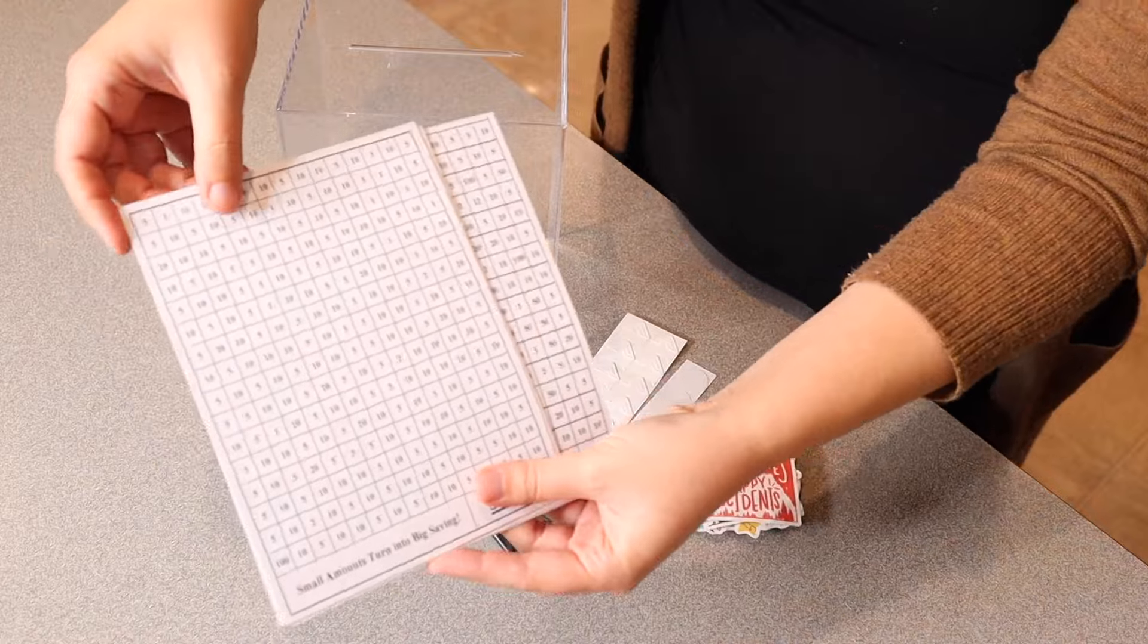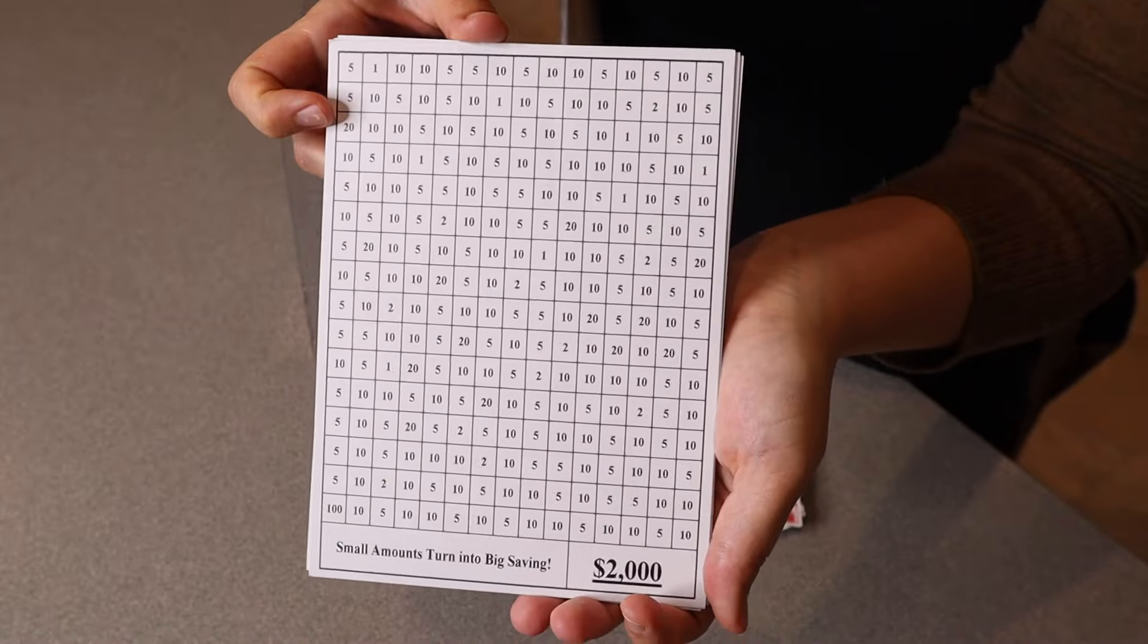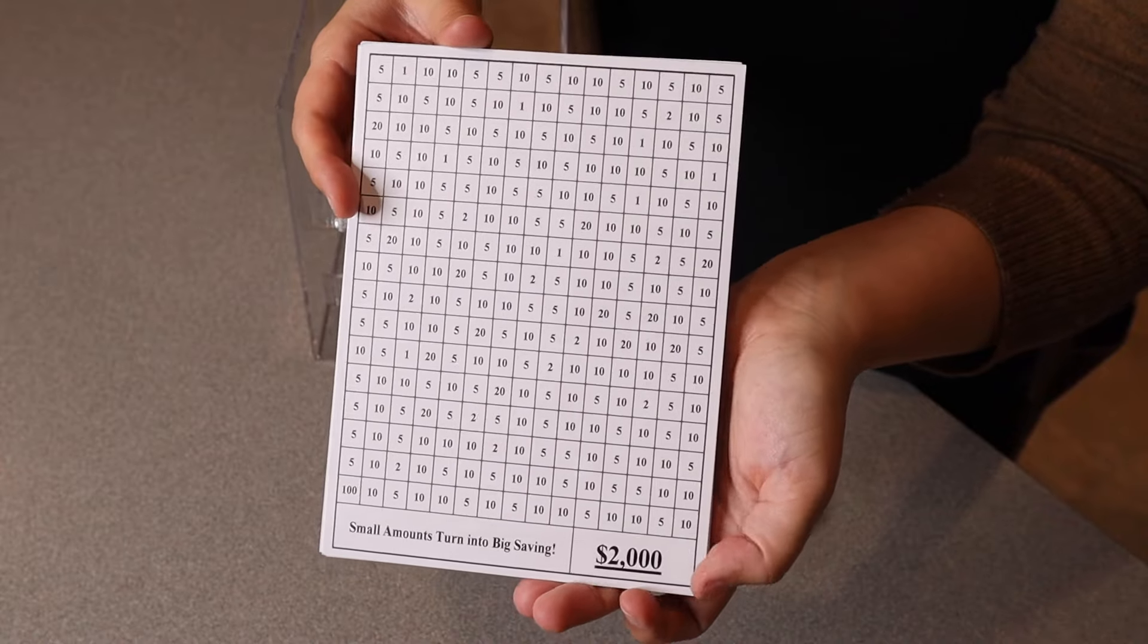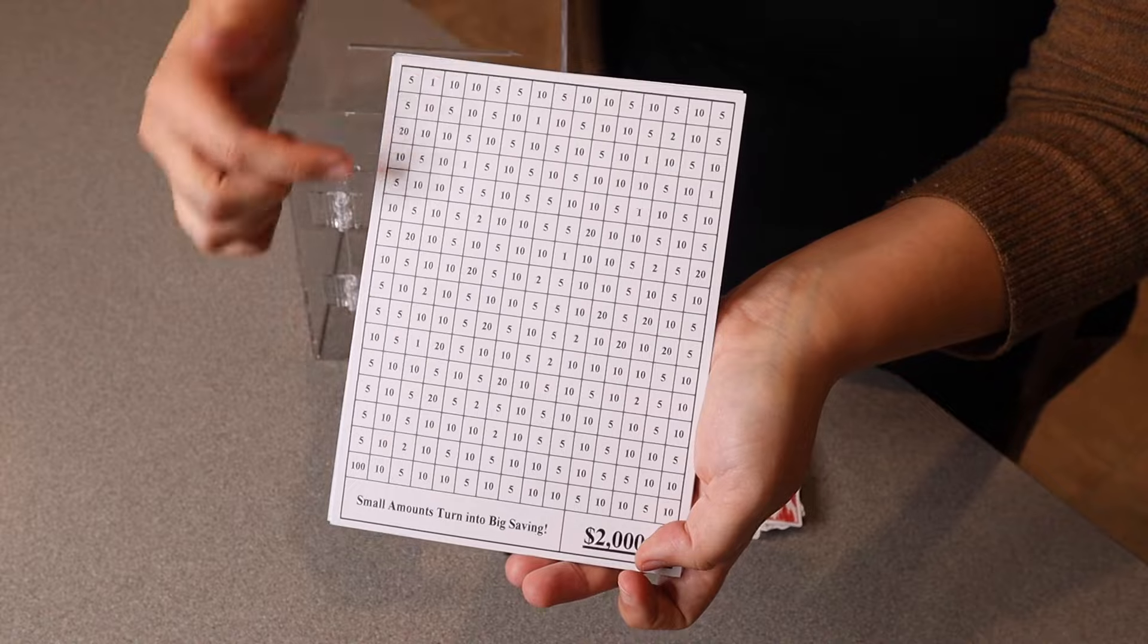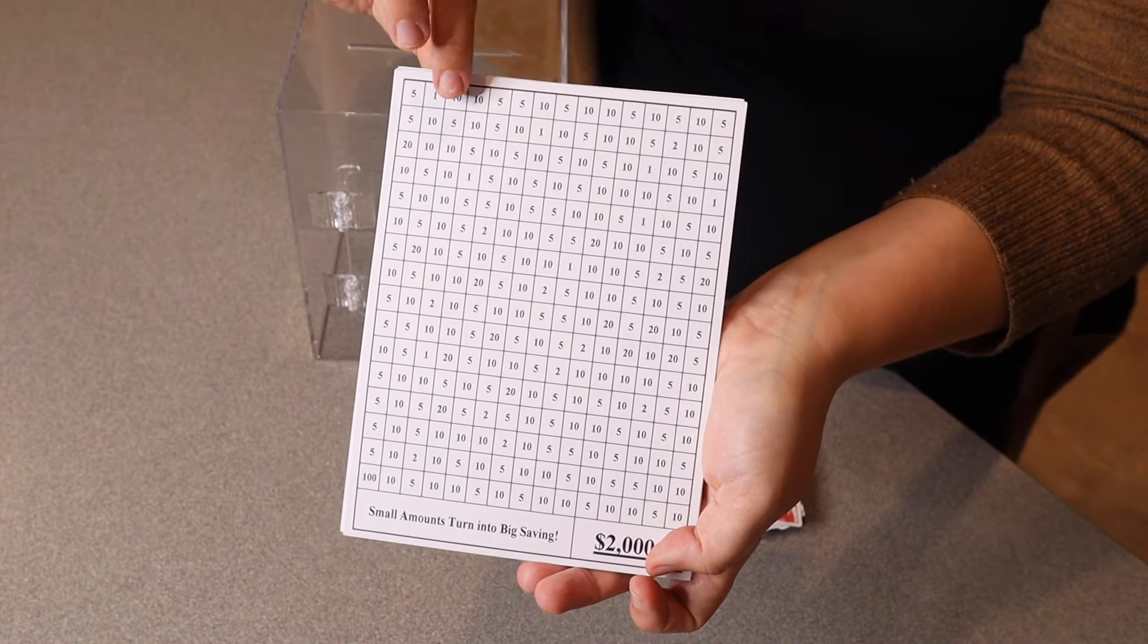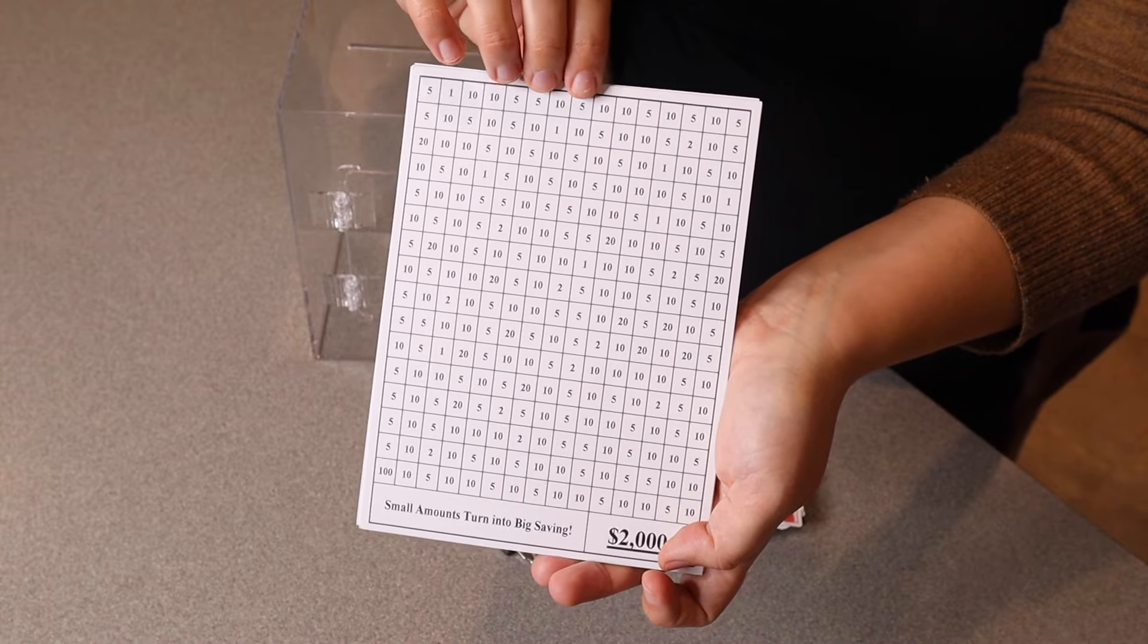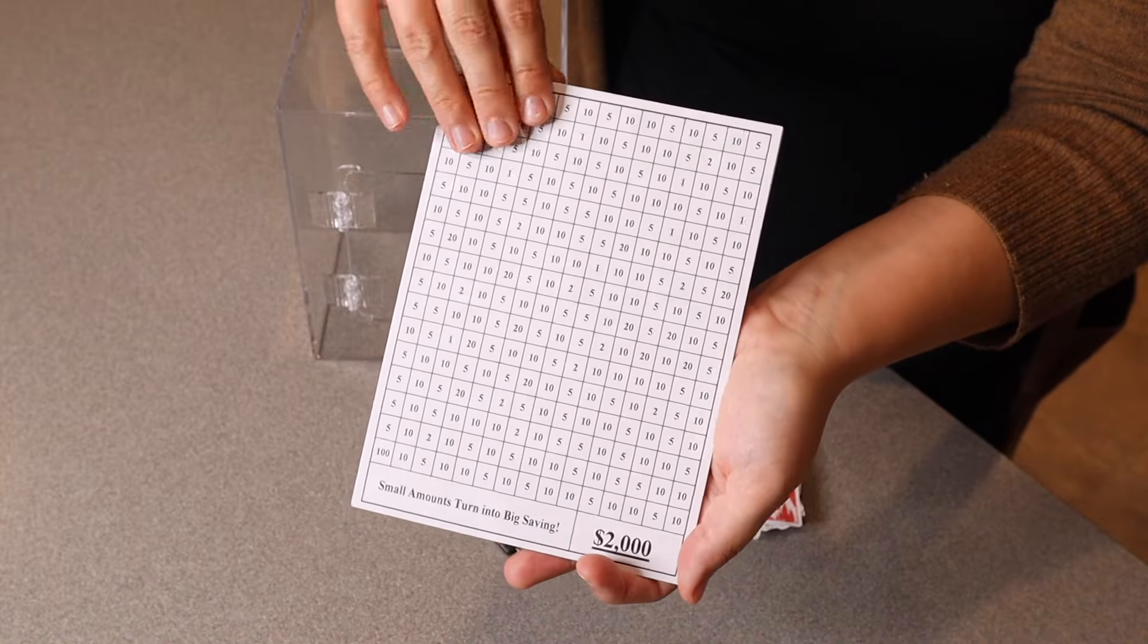This comes with four different savings plan sheets and they are double-sided. You can see like this one on top. This is a savings plan that in the end would save you $2,000 and it has all these different assorted amounts on the card. Whenever you deposit that amount you cross it off and when you have everything crossed off your amount inside your piggy bank is going to be $2,000 which is really cool.